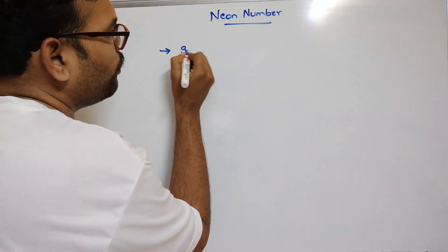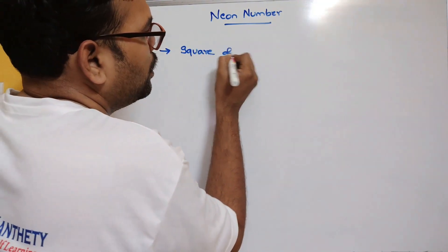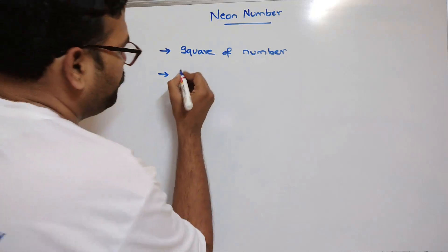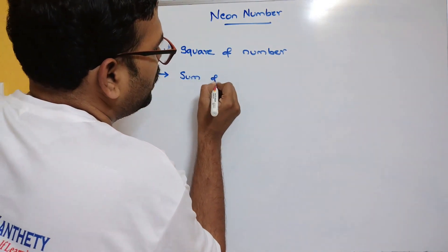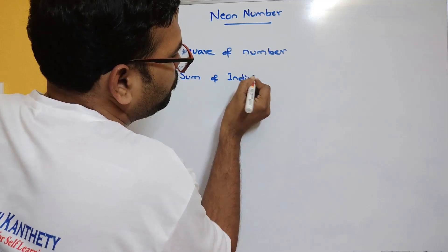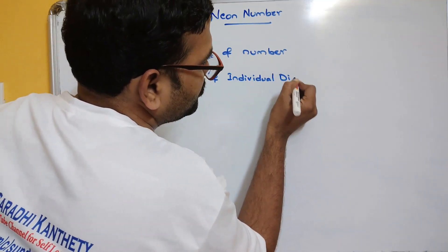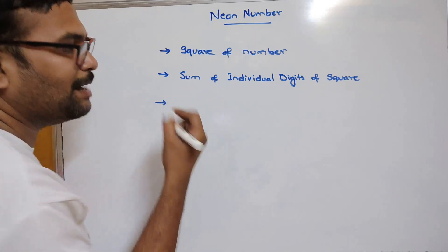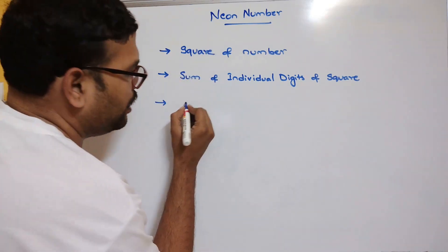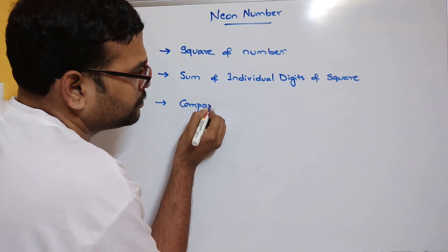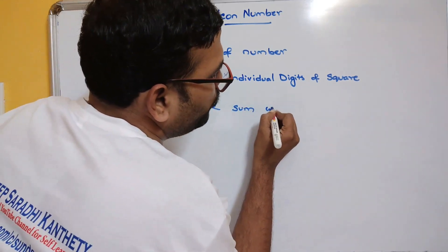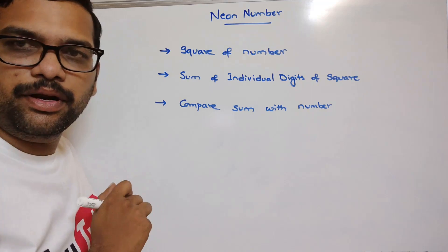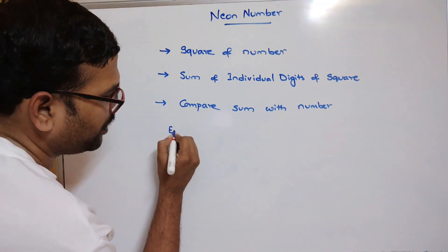If a number is called a neon number, first we need to find the square of the number, and after that we need to add the individual digits of this square — that is, the sum of individual digits of the square — and then compare that sum with the original number n.